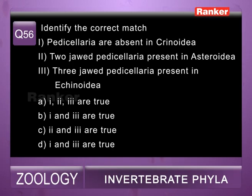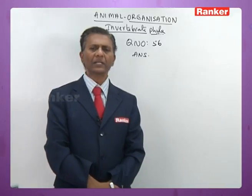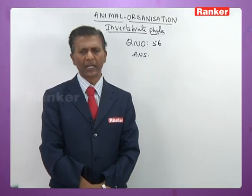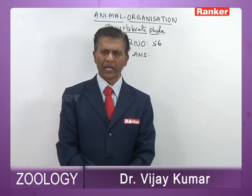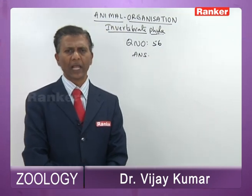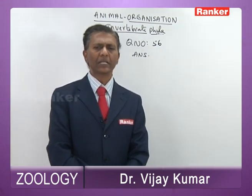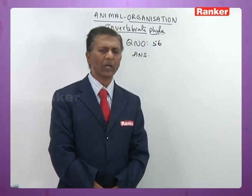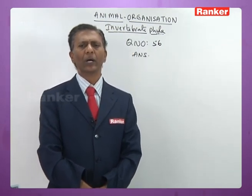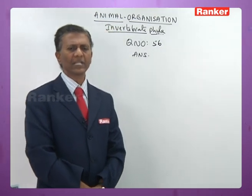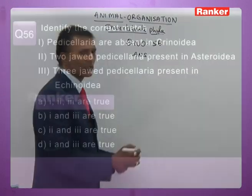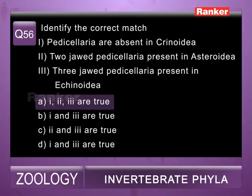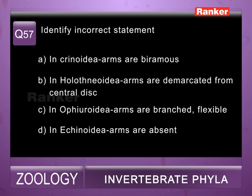Question fifty-six: identify correct matches — 1) pedicellariae absent in Crinoidea (correct), 2) two-jawed pedicellariae present in Asteroidea (correct), 3) three-jawed pedicellariae present in Echinoidea (correct). All options one, two, and three are correct. So fifty-sixth question correct answer is a.